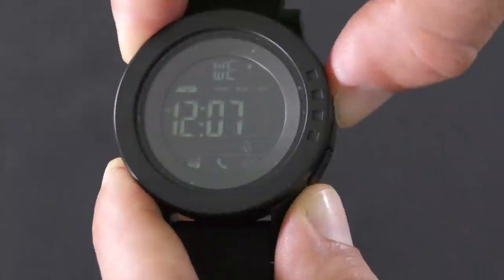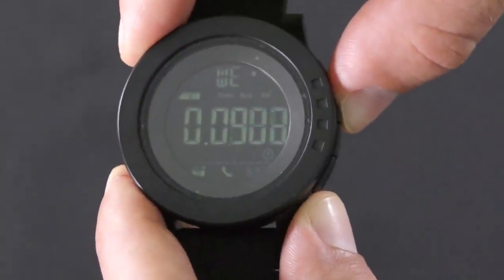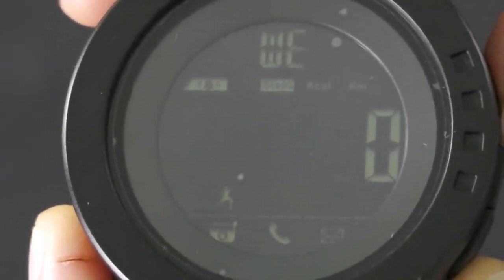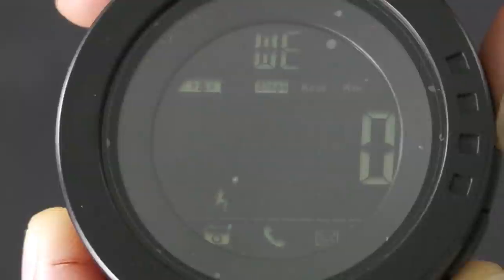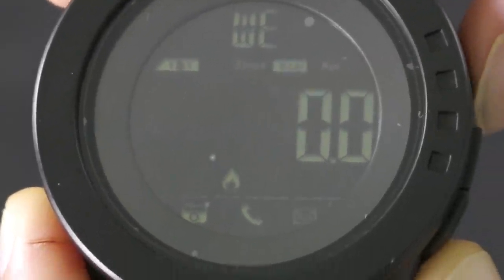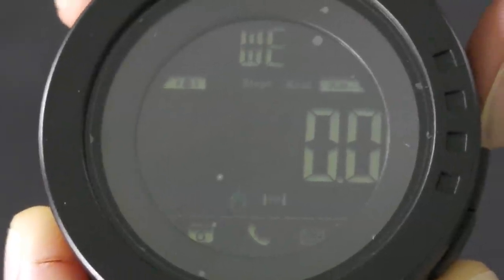The watch includes a pedometer to count your steps. You can check your steps count by pressing button number three twice. Another press will show you your calories count, and another press will show you the distance you went. All those details are calculated during a period of 24 hours according to your profile that is updated in the app.